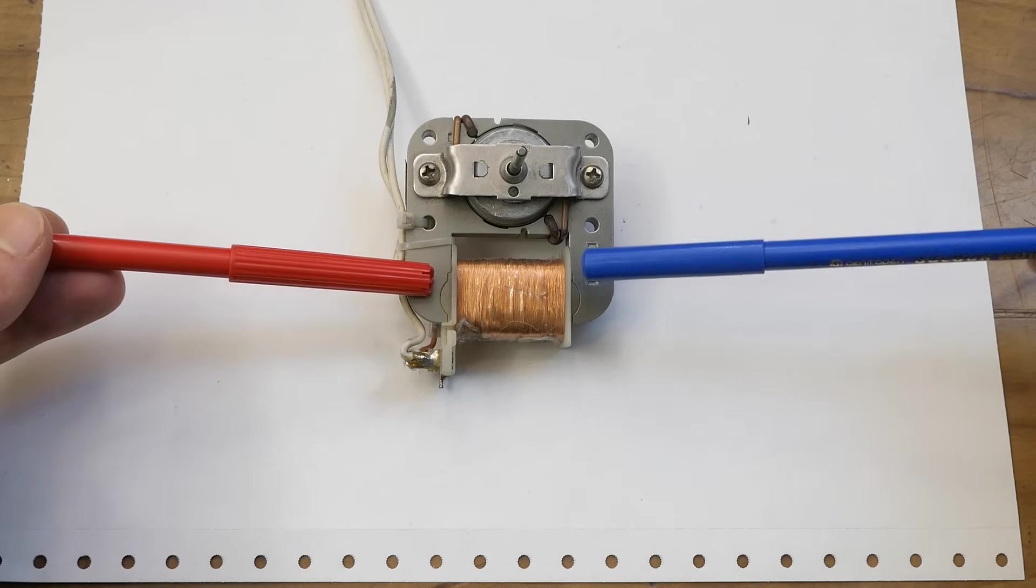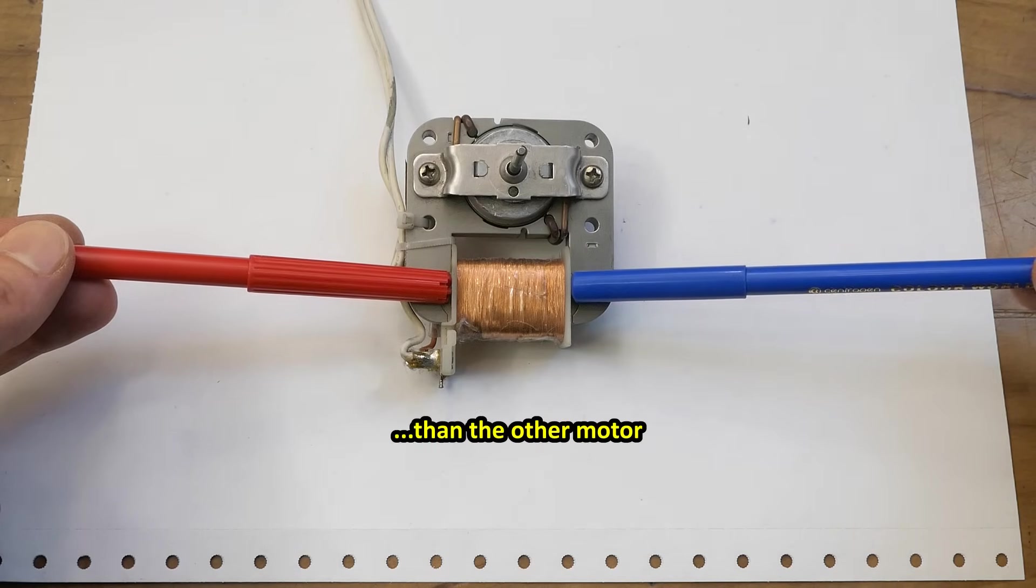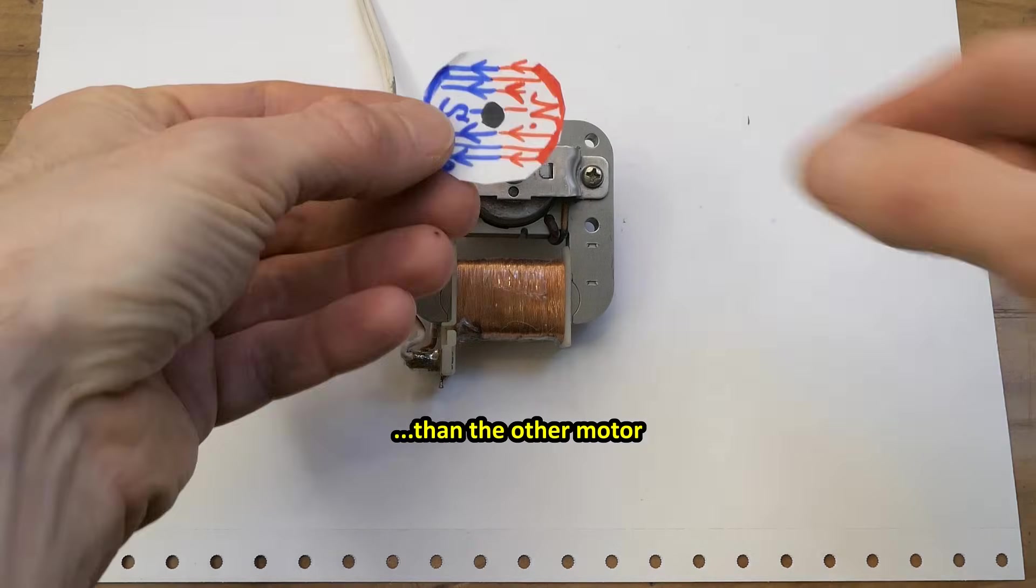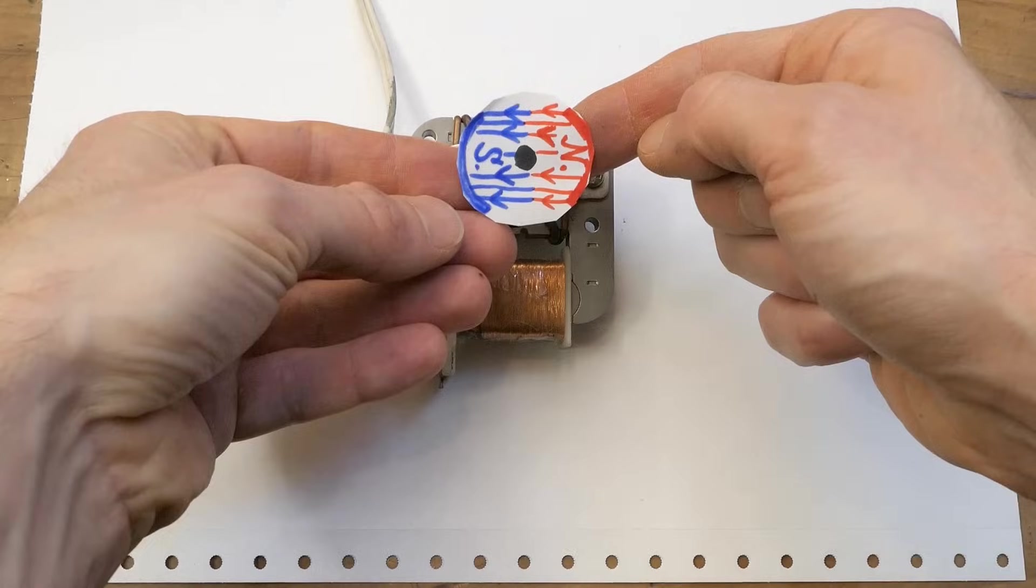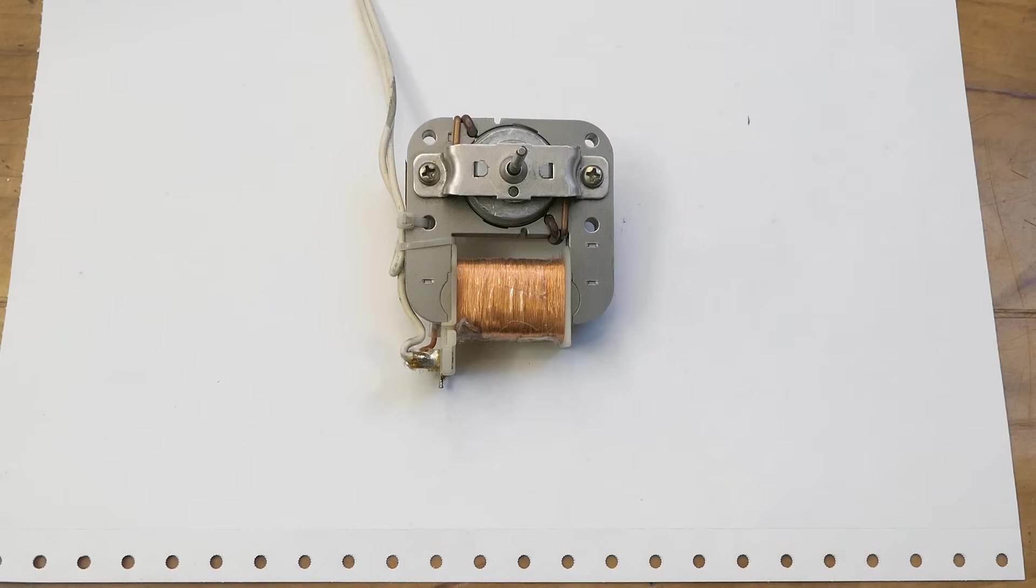And this motor has just two poles, one pair of poles, so it's turning faster. It's basically just one north and one south. And to create a phase shift instead of a capacitor, there are these short turns on it.